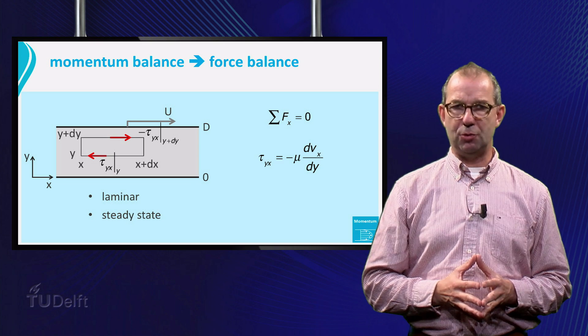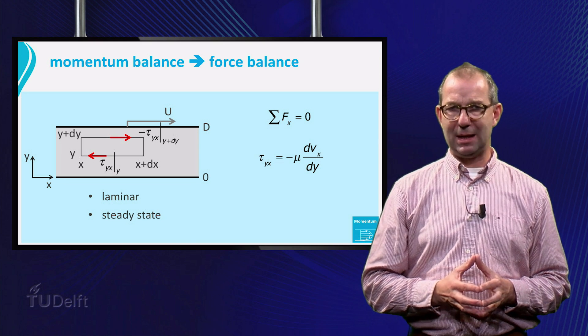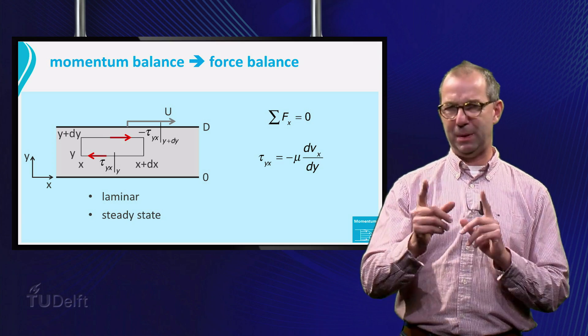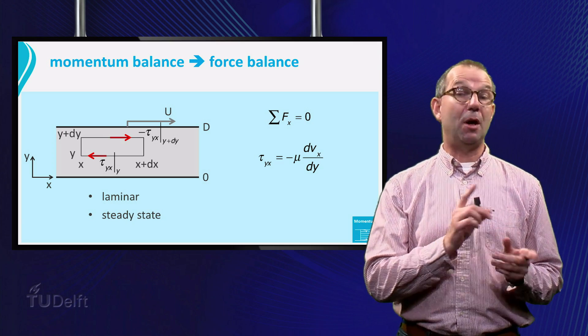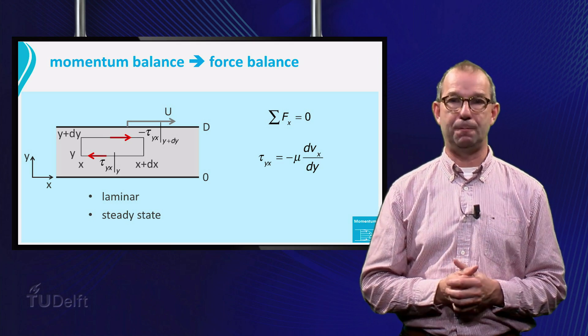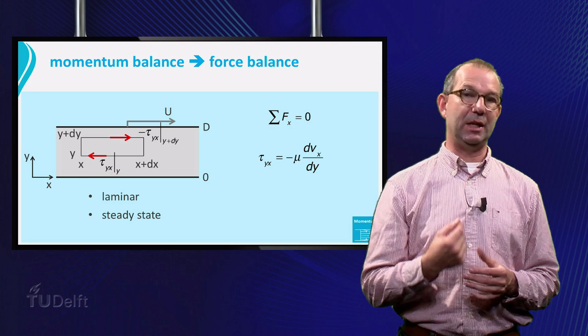Finally, note that we draw the friction at the bottom acting to the left and at the top to the right, as we anticipate that this will happen. But in our force balance, we should not use this a priori knowledge. It should come out of the analysis.